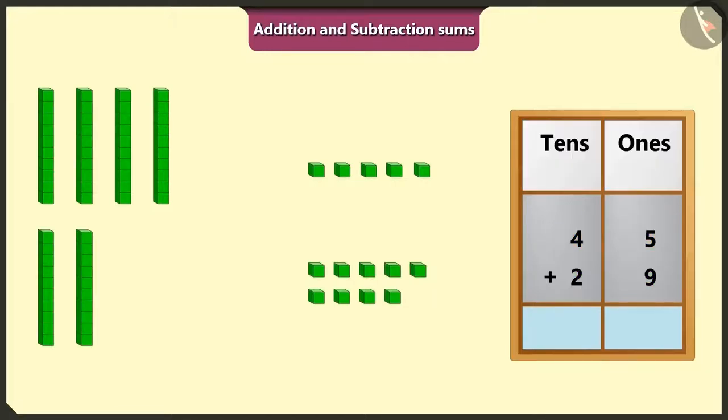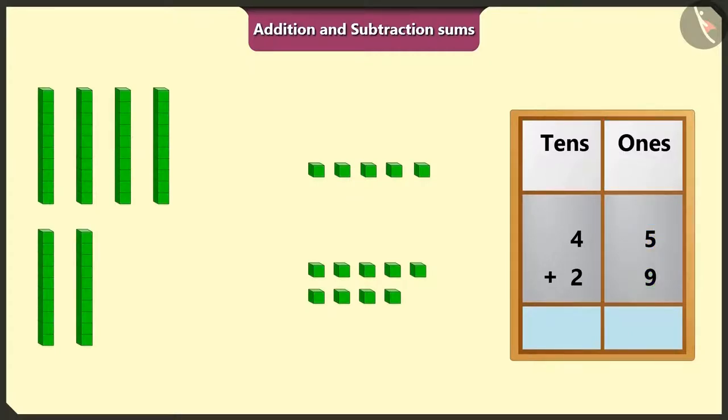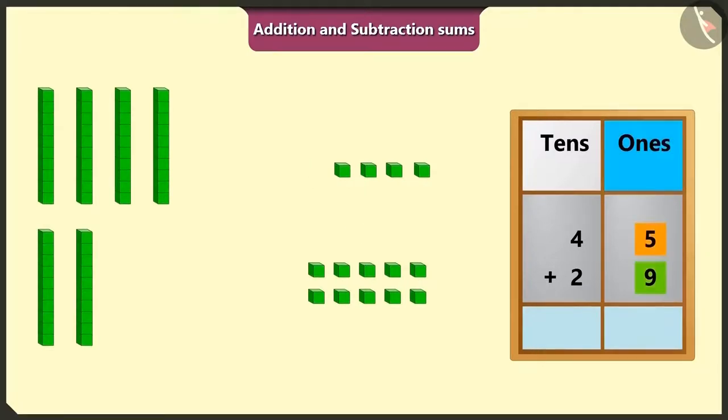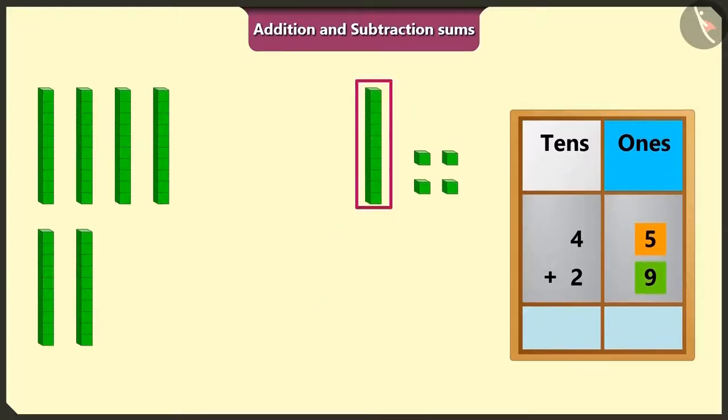We have to add the numbers of the box of ones first. Here, if we will add 5 ones to the bigger number 9, after 9 it will be 10, 11, 12, 13 and 14. There are 4 ones and 1 ten in 14. So, we will write 4 in the place of ones and carry over 1 in the place of tens at the top.